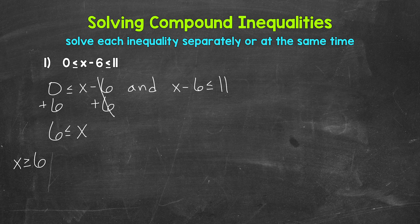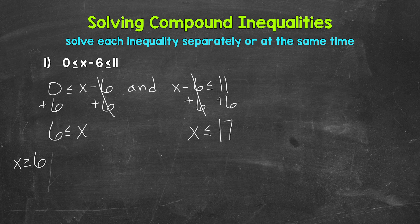Now we need to solve x minus 6 is less than or equal to 11. Let's isolate x by adding 6 to both sides. The 6s on the left cancel each other out, so x is now isolated. We get x is less than or equal to 11 plus 6, which is 17. So x is less than or equal to 17.